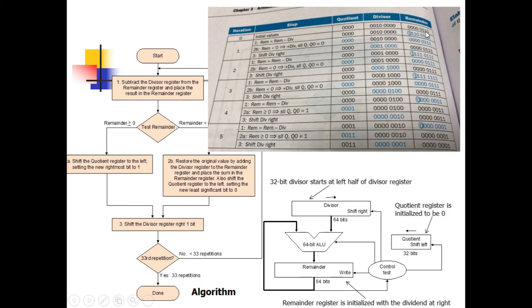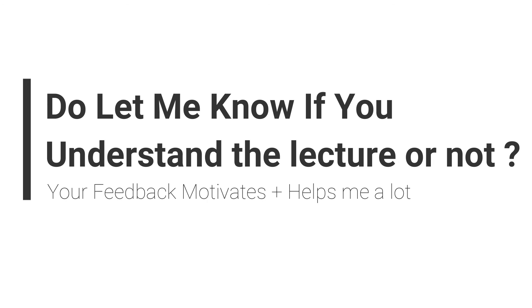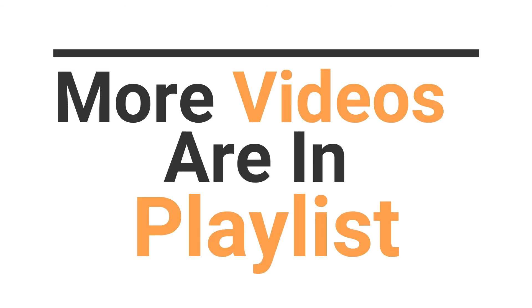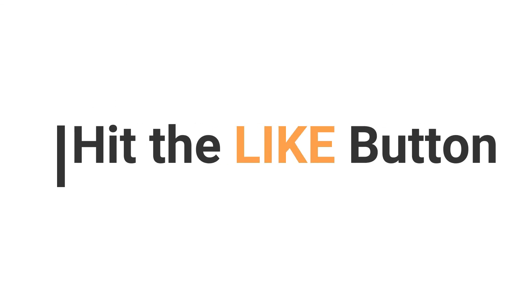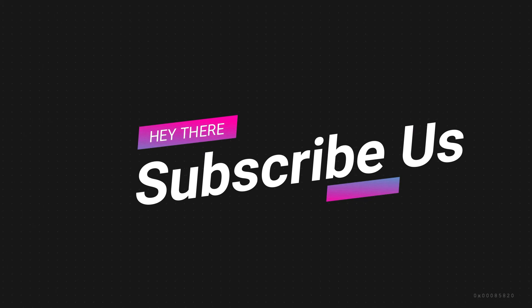After all iterations, we were dividing 7 by 2. The result is a quotient of 3 and a remainder of 1, which is correct. The algorithm is complete. If you understood the lecture, please comment below and give the video a thumbs up. Subscribe to channel Teach Me Technically — thanks for watching!